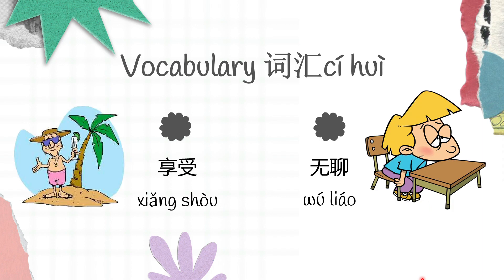Another set of vocabulary: 享受 and 无聊. 享受 is enjoy and 无聊 is boring. Let's read together: 享受, 享受, 享受. 无聊, 无聊, 无聊.